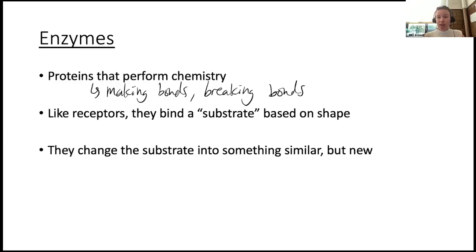Like a receptor, it grabs on to something. Although, as I've mentioned before, scientists love to use a million different words. So why not have a new word for this? It's called a substrate. Don't worry, you don't have to memorize all these words, folks. And similarly to receptors, the shape matters a lot. And so they take that thing, they do some chemistry onto it, and turn it into something similar, but new. Maybe a new bond was formed, for example.